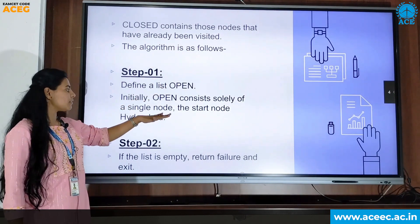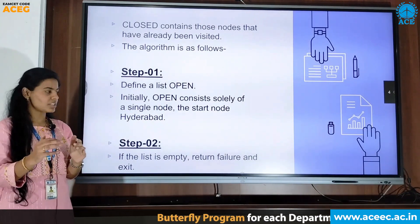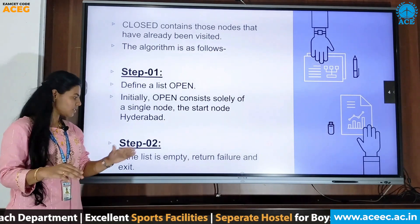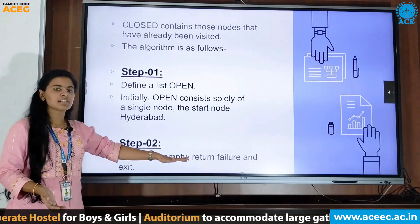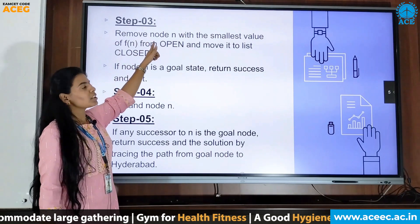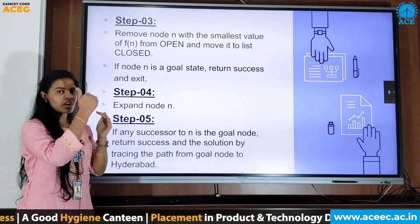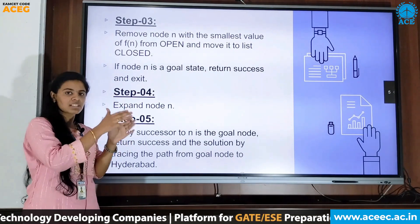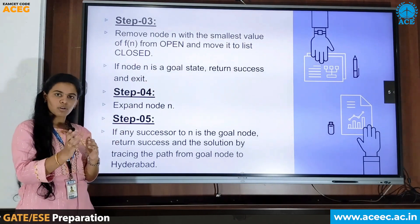First, we define a list called open, in which we have the single initial node. Next, we traverse through the child nodes of the initial node and compare them. If there are child nodes, we continue the process of traversing. If there are no child nodes, we return that the list is empty — it is a failure. If there are child nodes, we remove the node having the smallest value, that is the shortest path, and keep it in the open list. The previous node moves to the closed list.